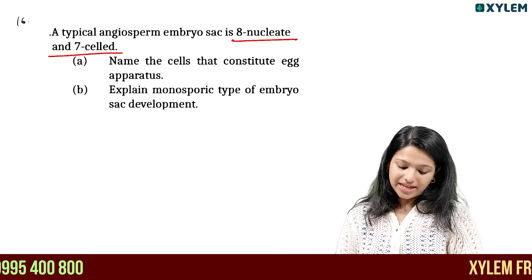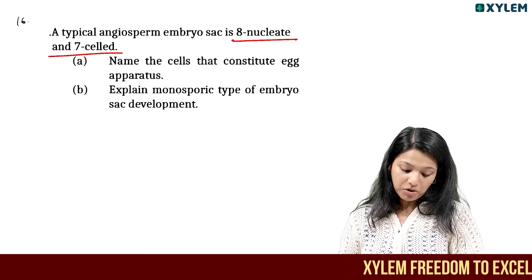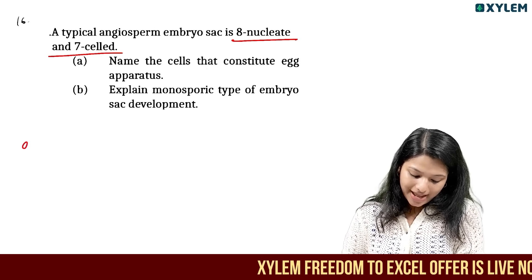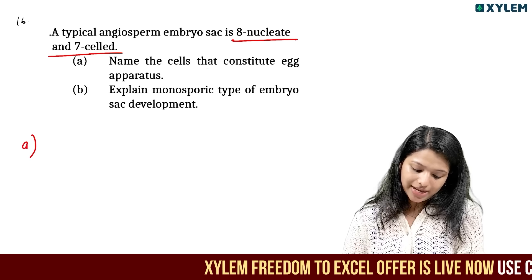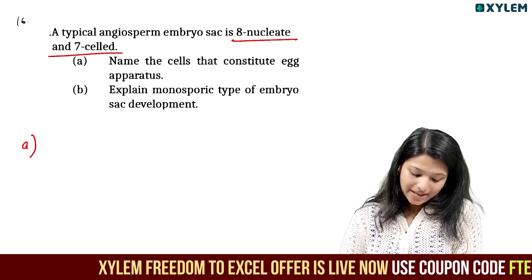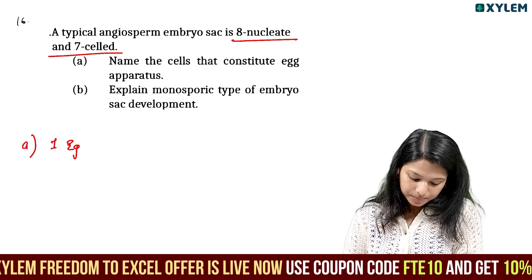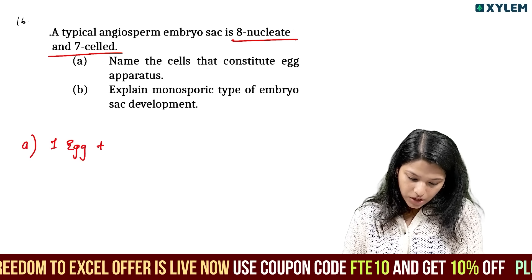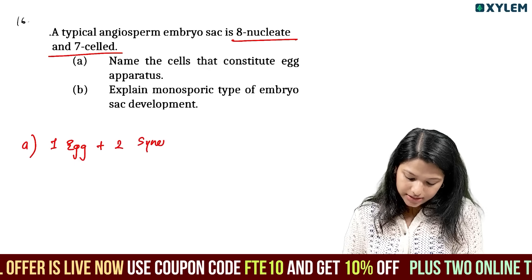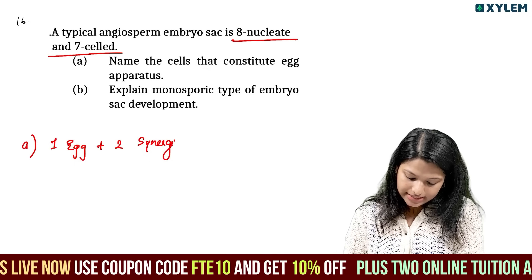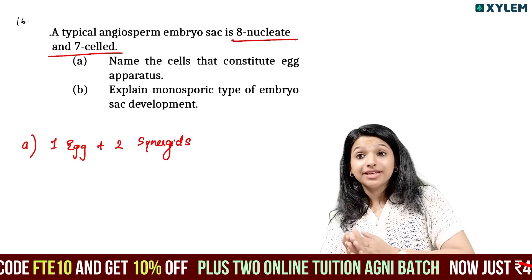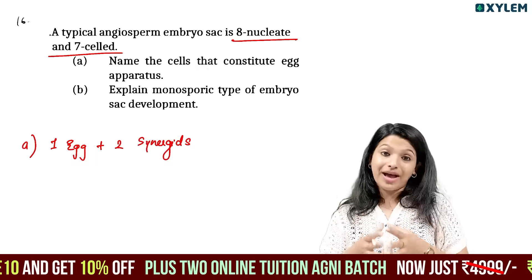Explain the monosporic type of embryo sac development. In the egg apparatus, there is one egg and two synergids. One egg and two synergids are combined together in the egg apparatus.